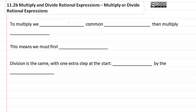11.2b Multiply and Divide Rational Expressions. To multiply, we divide by common factors, then multiply what's left over.